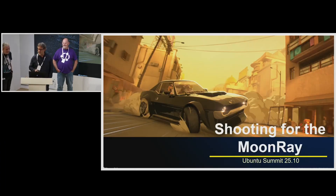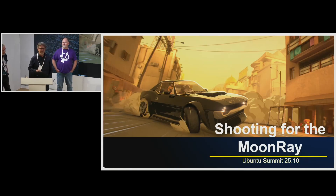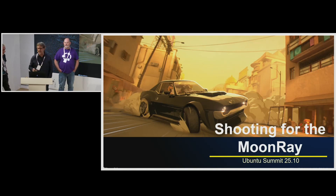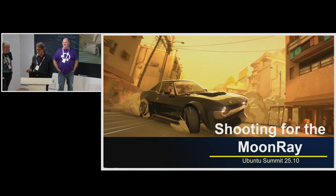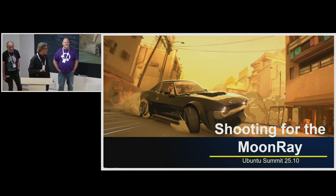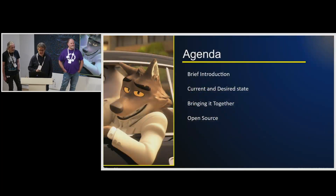Our topic today is called Shooting for the Moonray — our production path tracer Moonray, which we open sourced two years ago. Before I get into the details, I want to talk a little bit about how we got here. Two years ago we got invited to the Ubuntu Summit in Riga, Latvia. From there we met a lot of great people — great engineers from Microsoft, Canonical, and Snapcrafters and others. Through talking with the open source community, we started thinking about a snap for Moonray, and two years later, here we are.